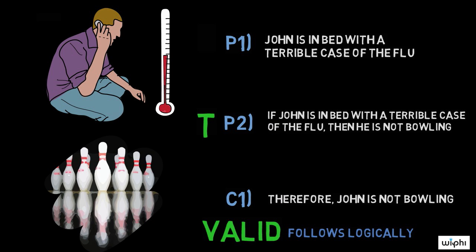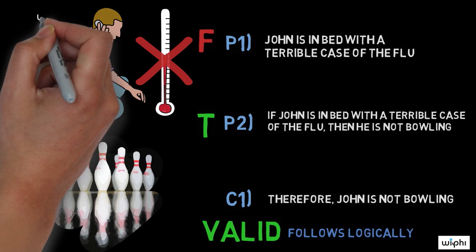Premise two seems untouched by this bit of evidence. Premise one, however, is in danger. She could conclude that John is not in bed with a terrible case of the flu. It seems he lied.